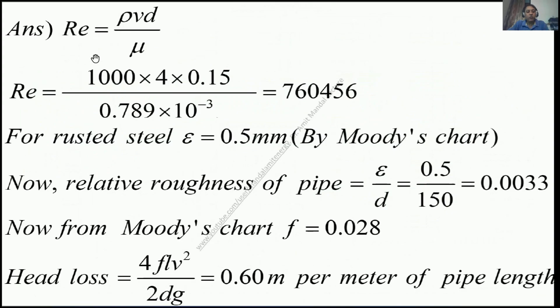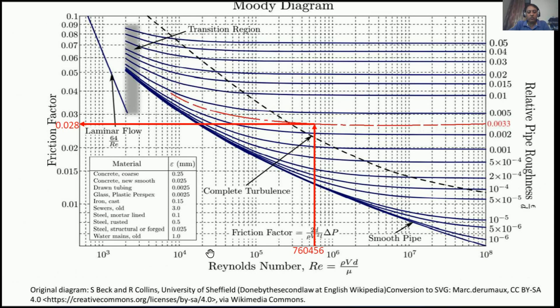First, you have to find the Reynolds number. That is Re = ρvd/μ. ρ is 1000, velocity of flow is 4 m/s, diameter is 0.15 m, and μ is 0.789×10⁻³. So Reynolds number comes out to be 760,456. For this Moody's chart we have found the Reynolds number.